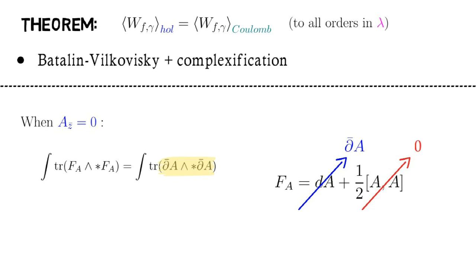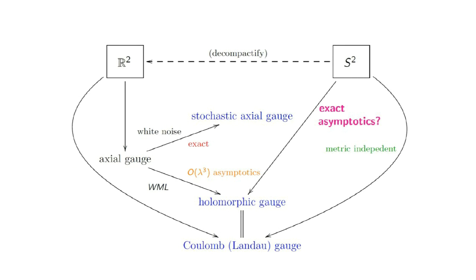In Coulomb gauge, the nonlinear terms in the curvature remain, and we have higher order interactions. And so the benefit of this theorem is that Wilson loop expectations computed in holomorphic gauge, while still non-trivial, are much simpler to evaluate than in Coulomb gauge. Going back to our main diagram, we now have the highlighted equality.